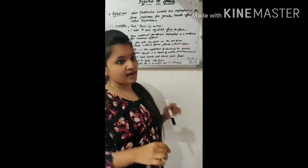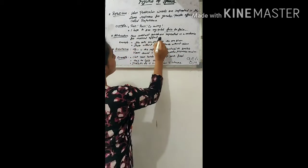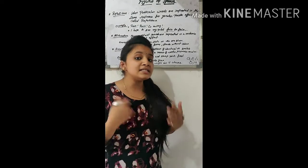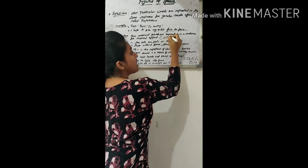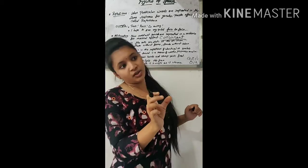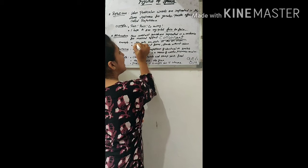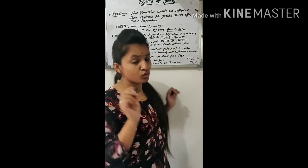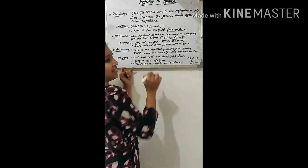In alliteration, consonant sounds are repeated in a sentence for a musical effect. The consonant sound is repeated, but you also need to keep in mind that it must be a consonant, and it should repeat at the first position of a word in the sentence. That is when we call it alliteration.